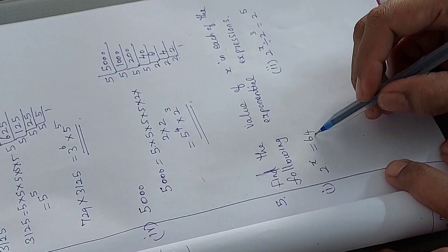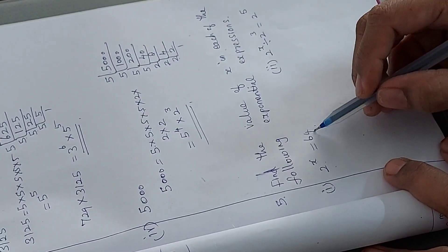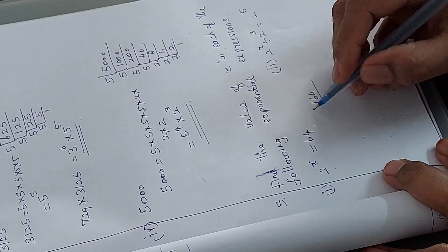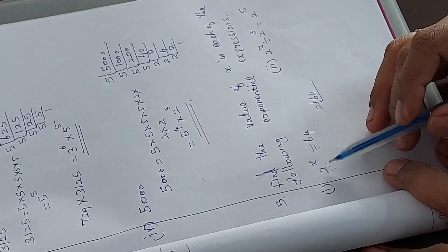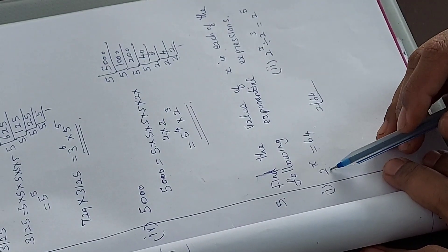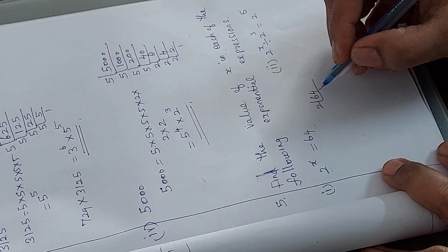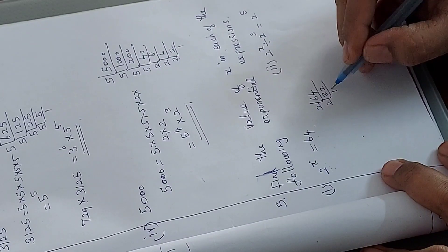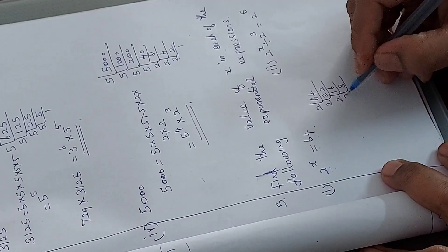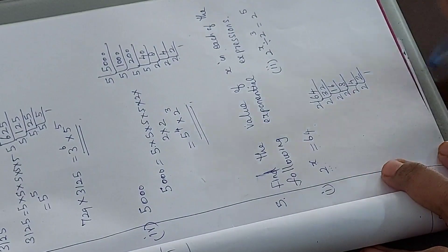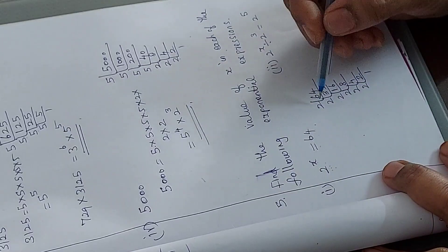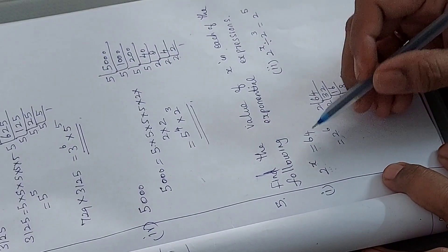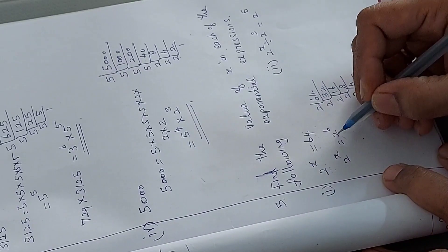What we have to do is reduce the right-hand side number into the same base as the left-hand side. That is, we divide 64 by 2 repeatedly: 64 ÷ 2 = 32, ÷ 2 = 16, ÷ 2 = 8, ÷ 2 = 4, ÷ 2 = 2, ÷ 2 = 1. We divided by 2 six times, so 64 equals 2 to the power 6. Therefore we can write 2 power x equals 2 power 6.